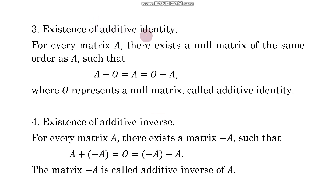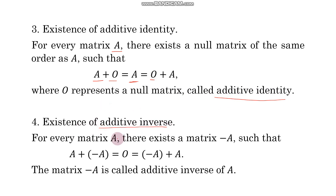Existence of identity: for every matrix A, there is a null matrix of the same order such that if you add A with this null matrix, you get A back. This null matrix is called the additive identity. Existence of additive inverse: for every matrix A, there exists a matrix minus A such that A plus (minus A) gives the additive identity. This minus A is called the additive inverse of A. These are some properties of matrix addition.